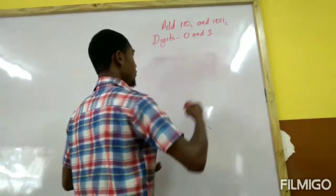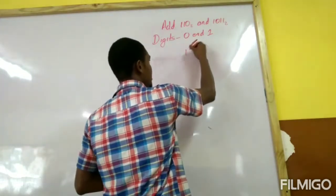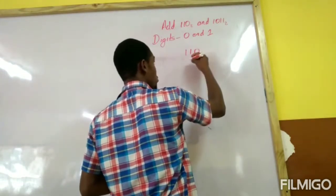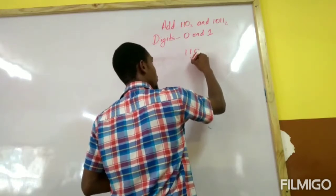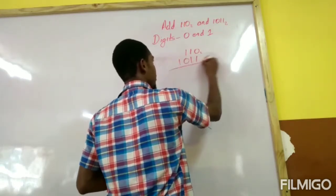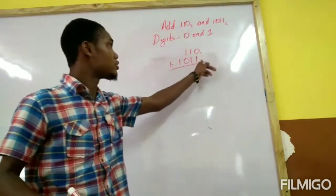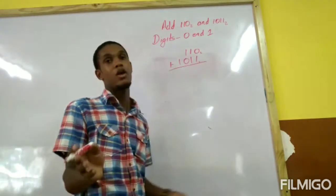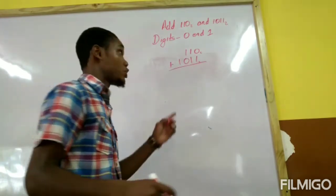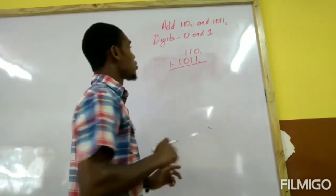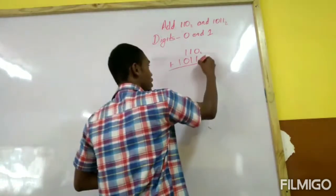Adding in binary still follows the same procedure as primary school. You write your number — 1 1 0 1 — and remember to put your little subscript 2, or whichever base you are in. The only time you don't really put it is when you are dealing with base 10. So, adding: zero plus one is one.